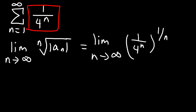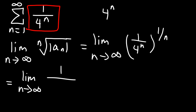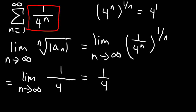Now, 1 raised to anything is just 1. For 4 to the n raised to the 1 over n, we multiply the two exponents: n times 1 over n equals 1. So this gives us 1 fourth. Since 1 fourth is less than 1, we can say that this series converges by the root test.